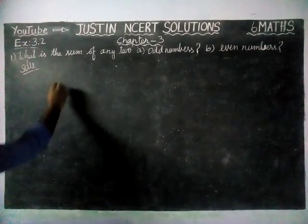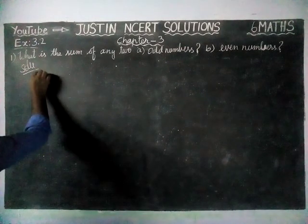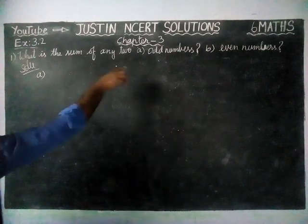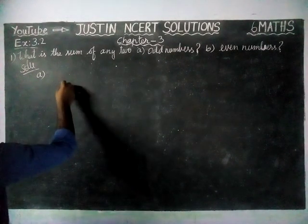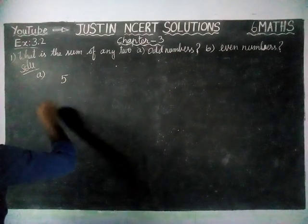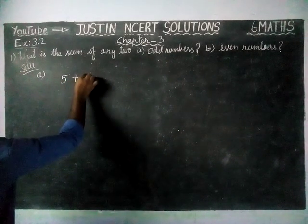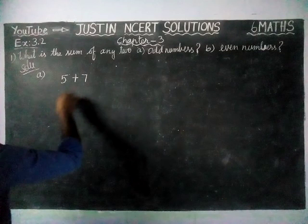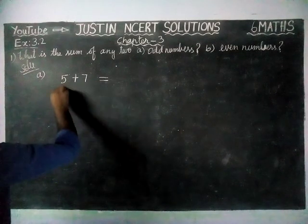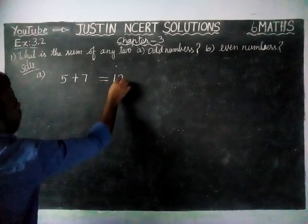We are going to take some numbers. First, we will take Option A. We will take some odd numbers. First, 5 is an odd number, plus 7 is an odd number, is equal to 5 plus 7 is equal to 12.